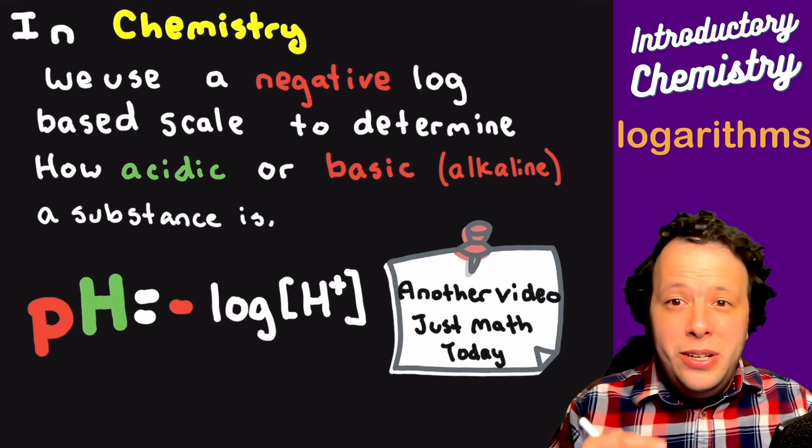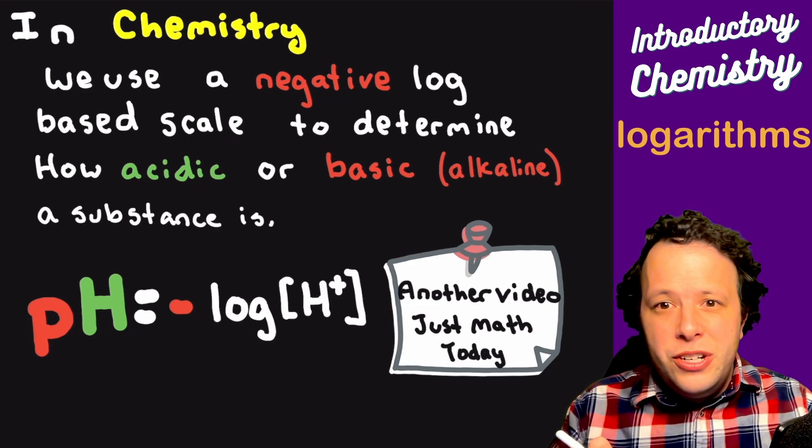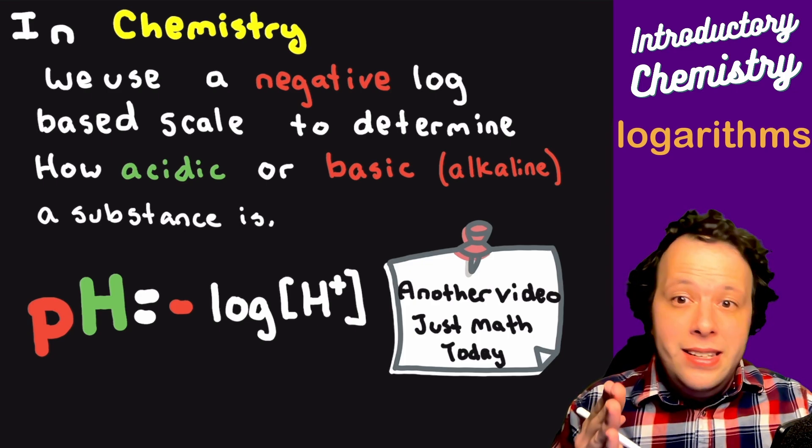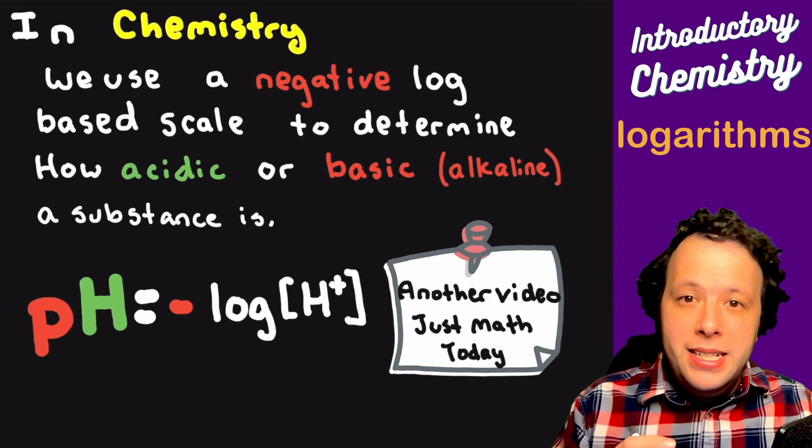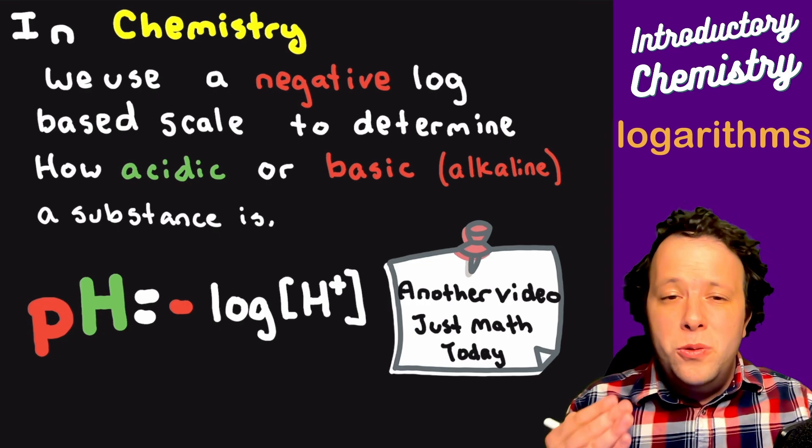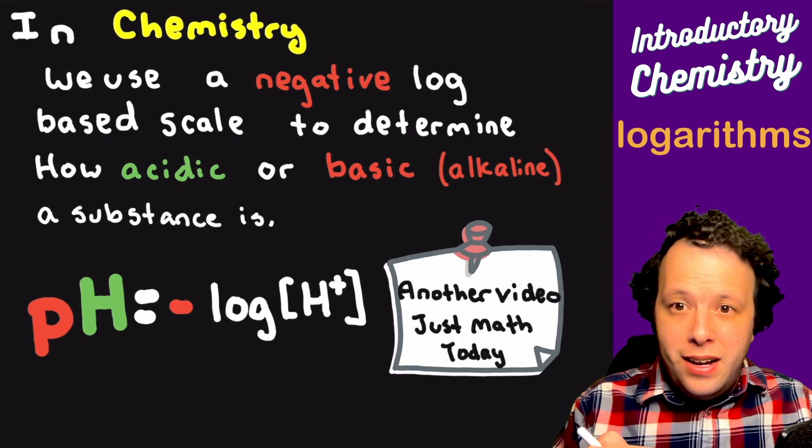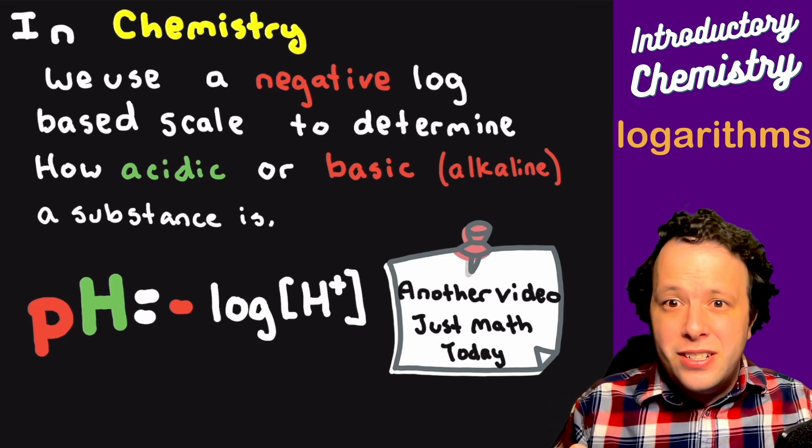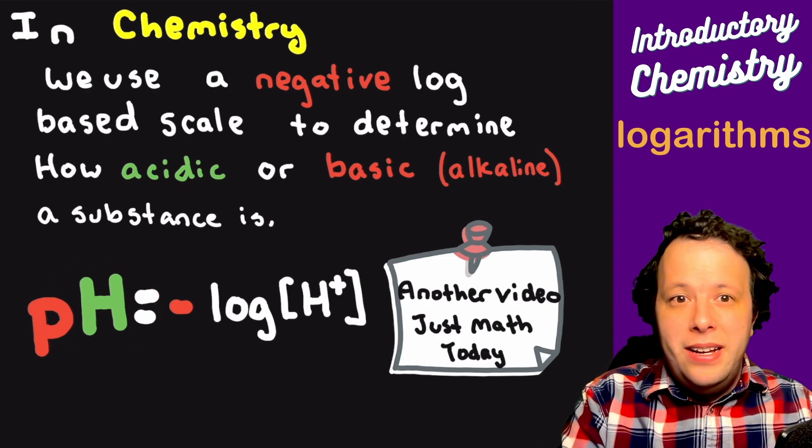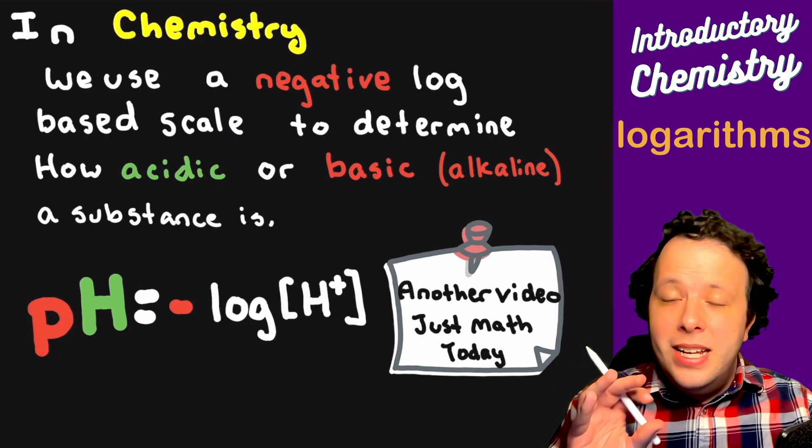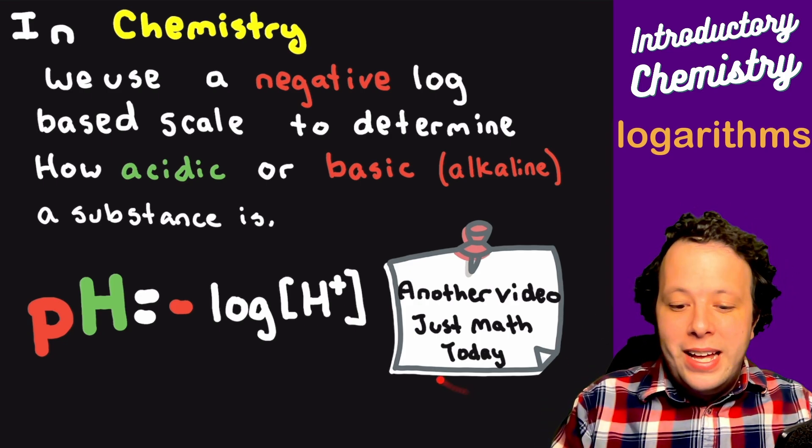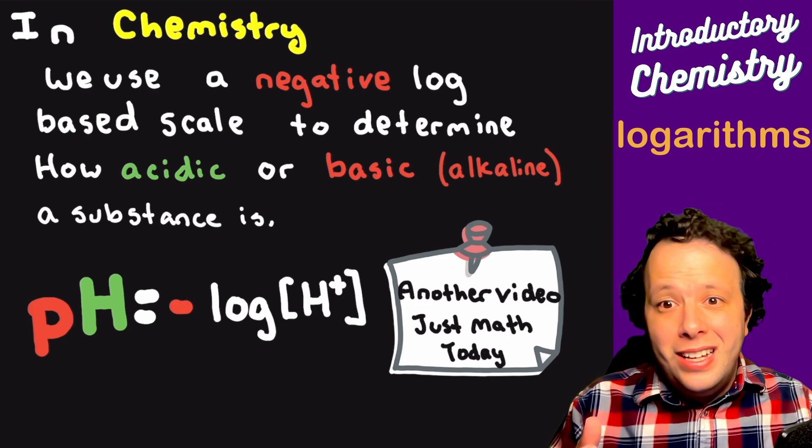In chemistry it's very common that we use scientific notation to denote different scales, because it helps simplify a lot of the numbers we use. We commonly use a negative log-based scale to determine how acidic or how basic a substance is, which is known as pH. You use pH in chemistry and biology and environmental science all the time. With the pH, all it is is equals to the negative log, and we're taking the function of the concentration of the acid. So we plug in the molarity of H+ into the log function and we will get a pH.